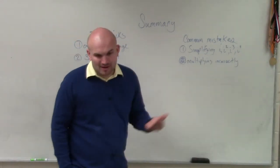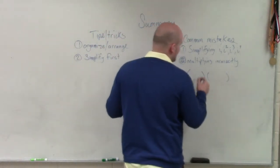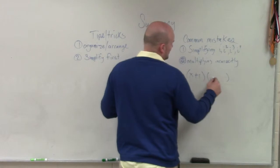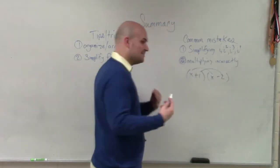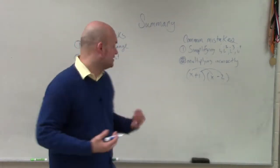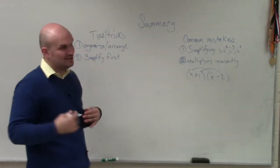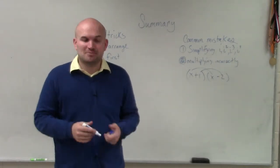Second thing is multiplying incorrectly. I get a lot, especially with students not following distributive property. If I had x plus 1 and x minus 2, they might say, oh, these two and then these two. You got to make sure you understand distributive property and can apply it. So I think also when it goes into the organizing, using the box method, using FOIL, using some things to make sure that you don't incorrectly multiply.